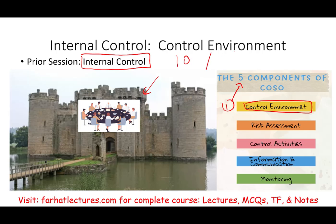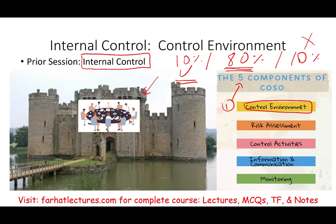We have a rule called 10-80-10. There are 10% of people who are always ethical and always do the right thing no matter what. There are 10% who are unethical, no matter how much you monitor, train, or guide them. The remaining 80% follow the people on top. Therefore, what determines whether a company is ethical is the people on top, because they influence the majority — the remaining 80%. That's why control environment is very important.